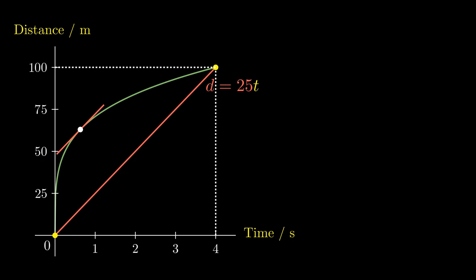On the other hand, the green curve, which represents the actual trajectory of the car, is a function. We do not know what this function is, so let's suppose this graph has equation d equals f of t.